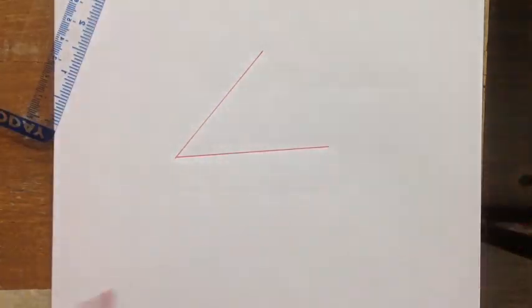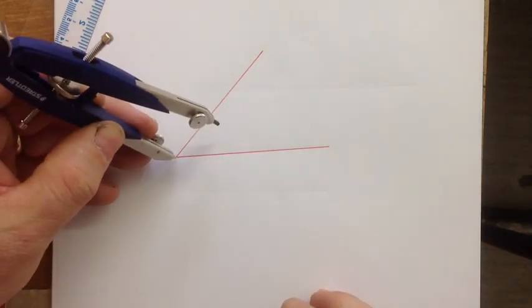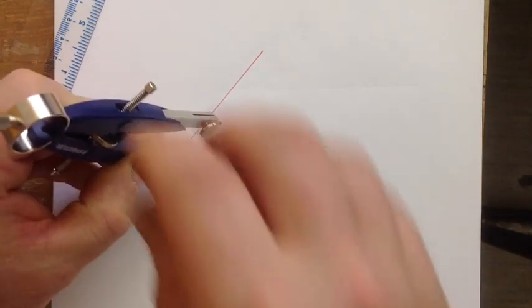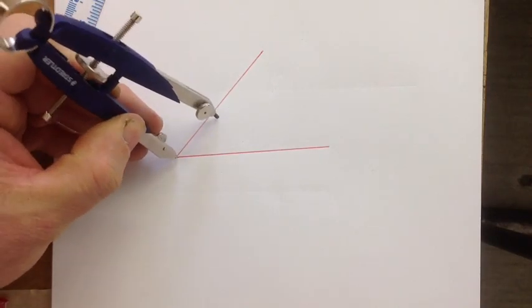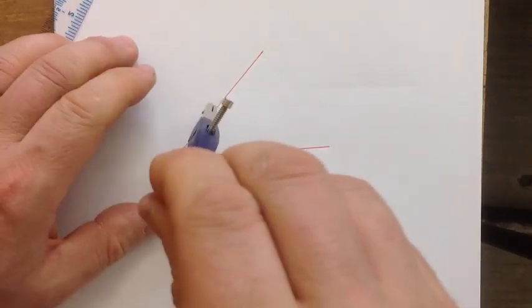What we're going to be doing is doubling the angle. So to double the angle, remember to copy an angle, you put the point on the vertex and you adjust your compass so it's about two or three or four centimeters long and you make an arc.